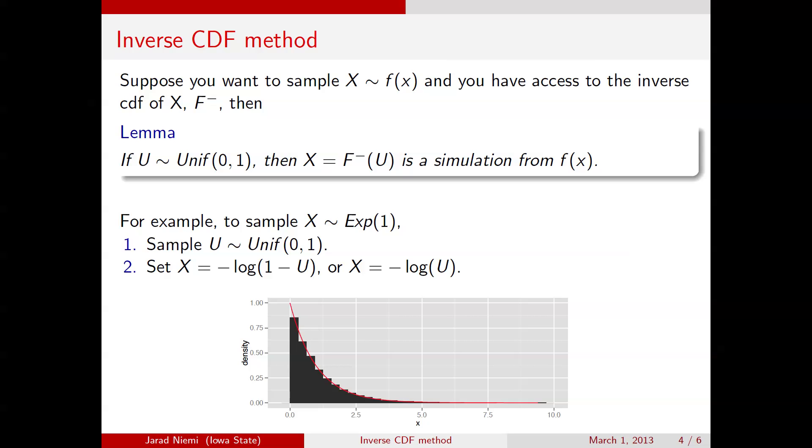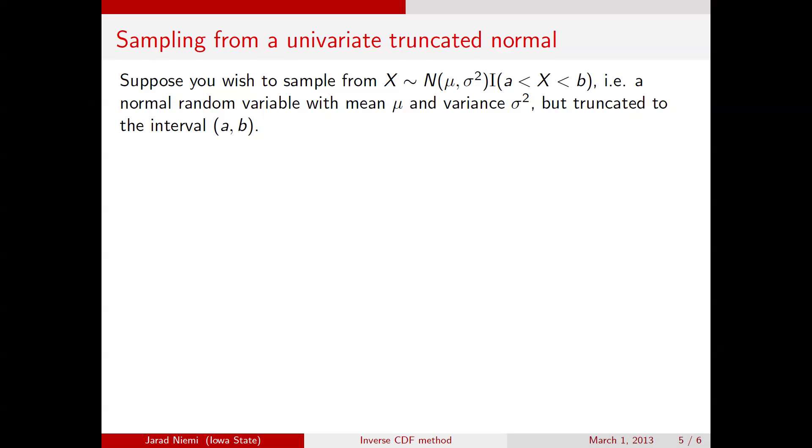That's the first example. The second example I'm going to use here is if you want to sample from a truncated normal. So here's the notation for a truncated normal, so x is a random variable that, if untruncated, would have a normal with mean mu and variance sigma squared, but now we're truncating it to be between a and b. So this random variable, the probability density function, has the same form as this normal mu and sigma squared, but only between a and b, and everywhere else it's 0.